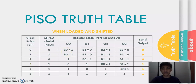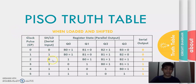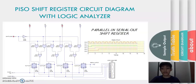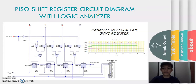On screen is a truth table of parallel in serial out shift register when the serial input is loaded and or when it is shifted. To demonstrate sample outputs, we are going to use the parallel in serial out shift register circuit diagram with a logic analyzer so that we can also observe the waveforms of the binary inputs and outputs.